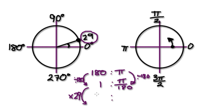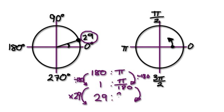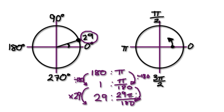So the left side becomes 29. And if you times this side by 29 as well, 29 gets multiplied to the top, so it would be 29 pi over 180. So 29 degrees is 29 pi over 180 radians.